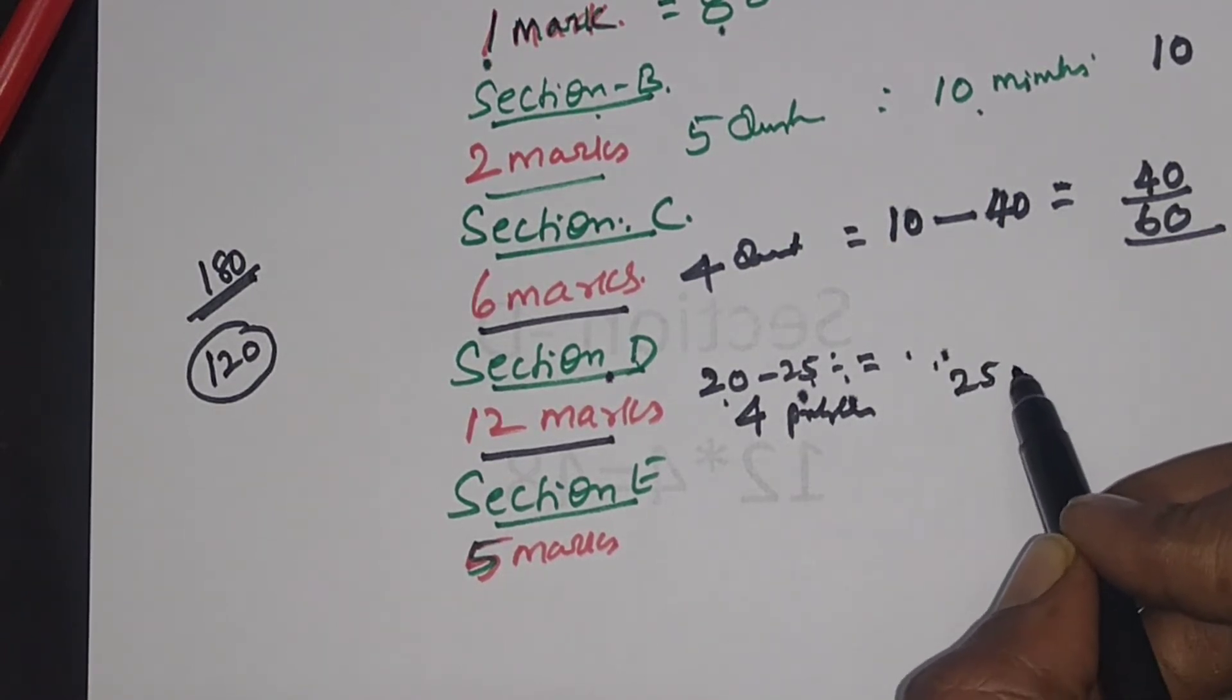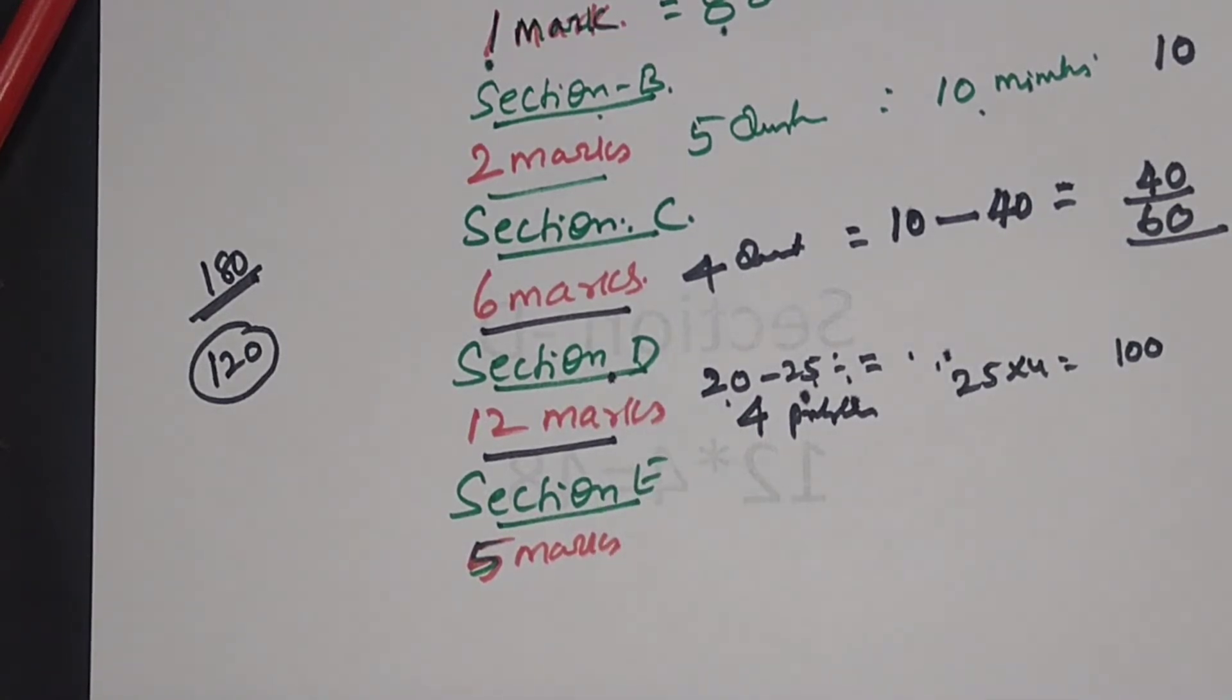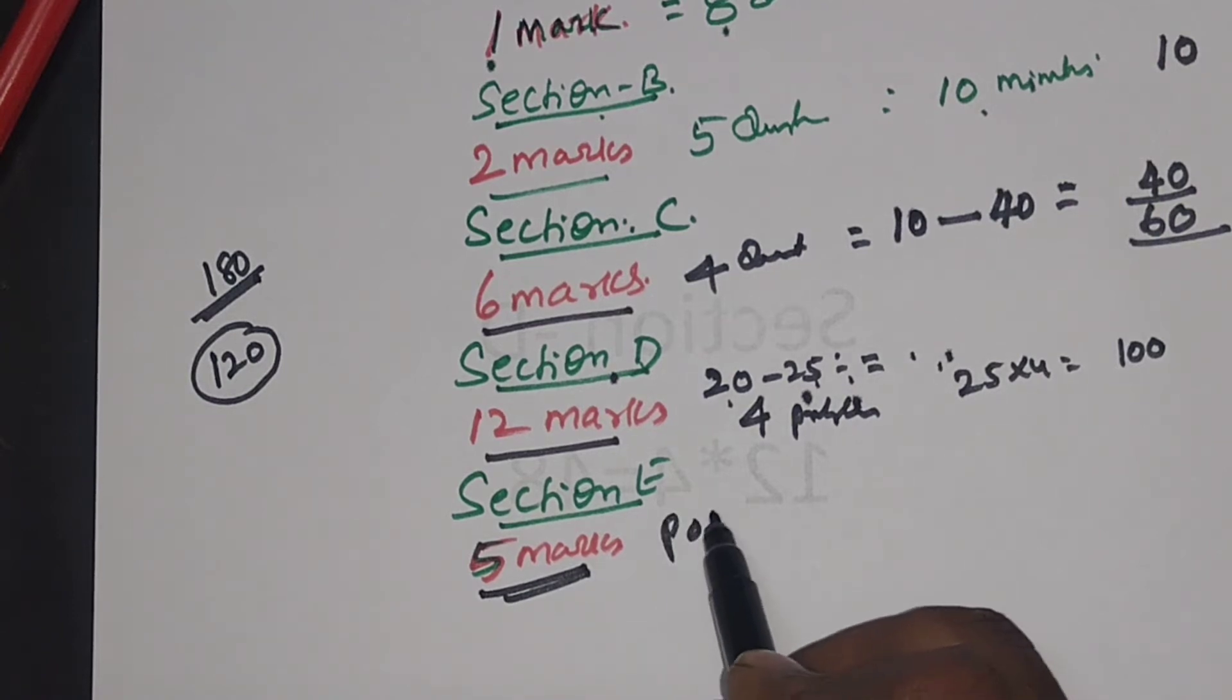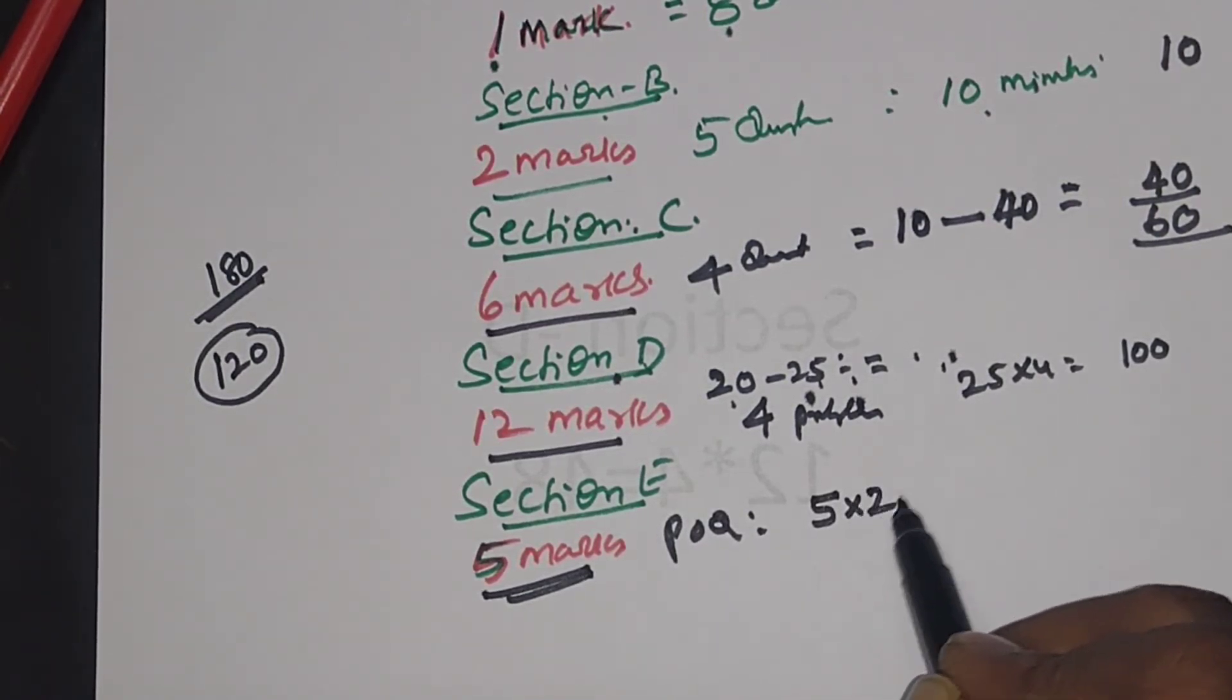So 25 minutes, if you take, 25 times four is 100 minutes for working out the four problems. In section E, practical oriented questions, at least five minutes per question, for two questions it will take 10 minutes.